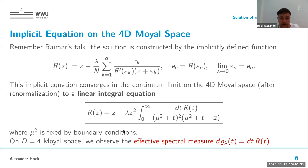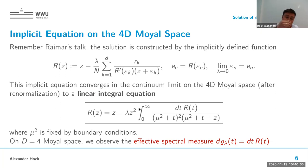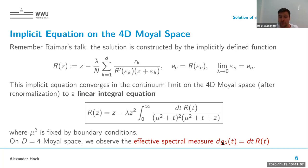On the four-dimensional Moyal space, we see that the spectral measure is transformed into an effective spectral measure depending on this R function. This comes from how we determined the exact solution, and you see an effective measure depending on the coupling constant.